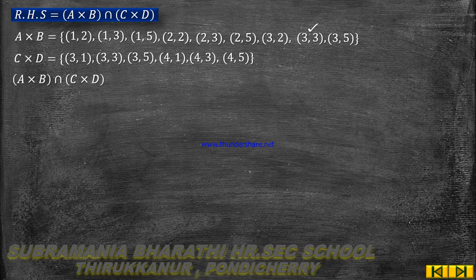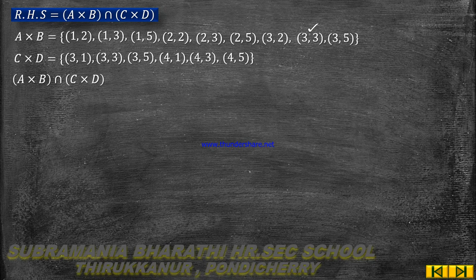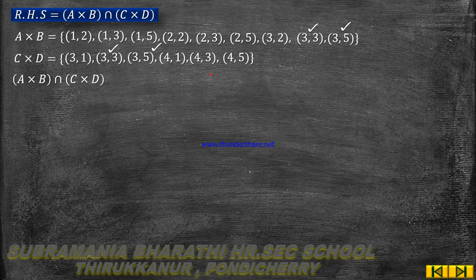C×D = {(3,1),(3,3),(3,5),(4,1),(4,3),(4,5)}. The common elements between A×B and C×D are {(3,3),(3,5)}. This is equation number 2.